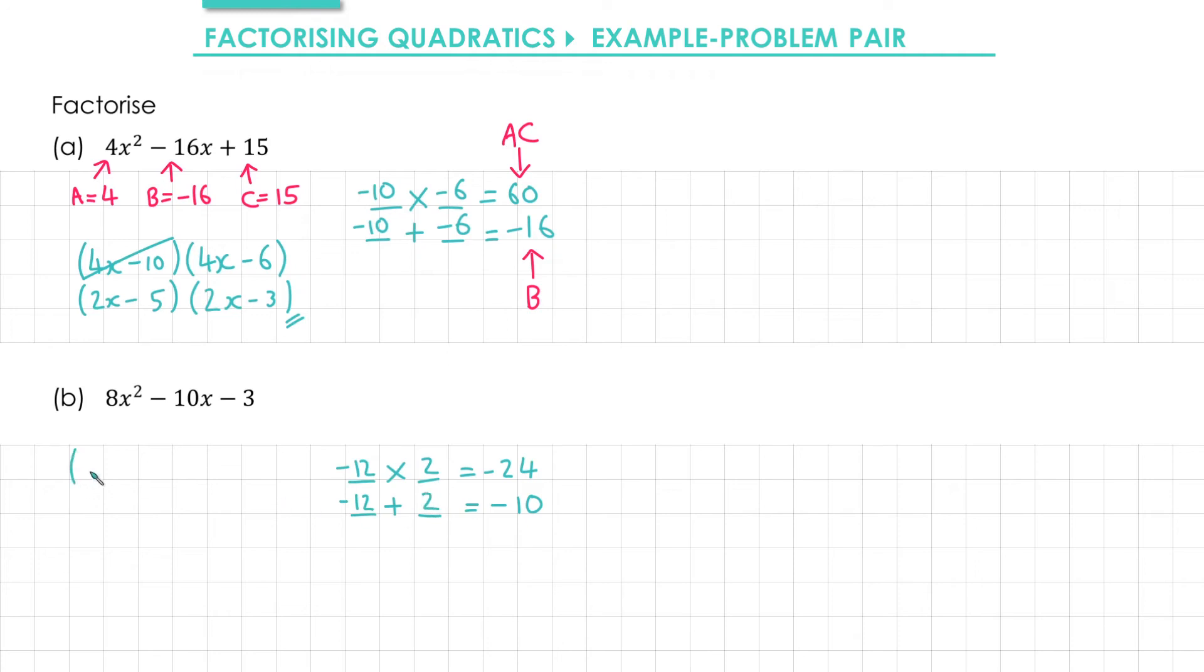Let's set up some brackets. We'll start with 8x in both brackets, and we'll add in our numbers negative 12 and 2.